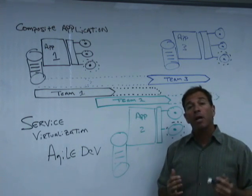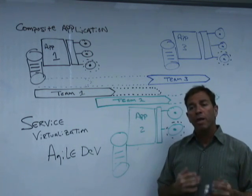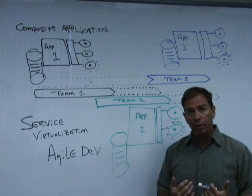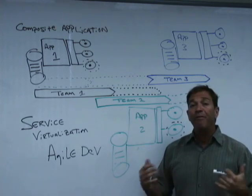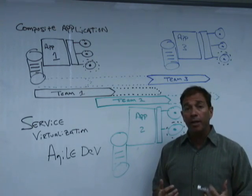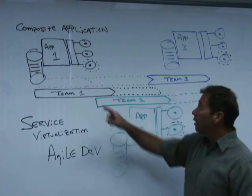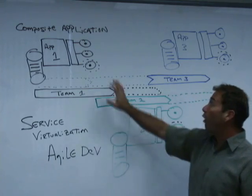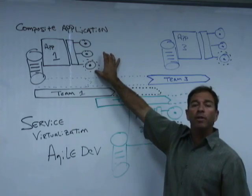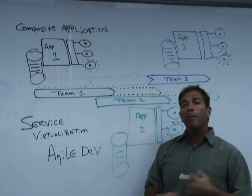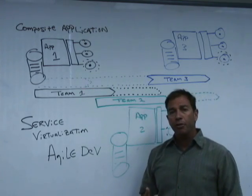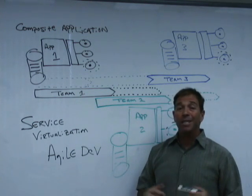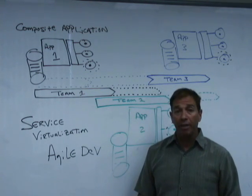With many of our customers, when they move to agile — especially in a composite or service-oriented architecture — they face a challenge: different teams at different times evolving endpoints. For composite applications and parallel development activities, this can really wreak havoc.